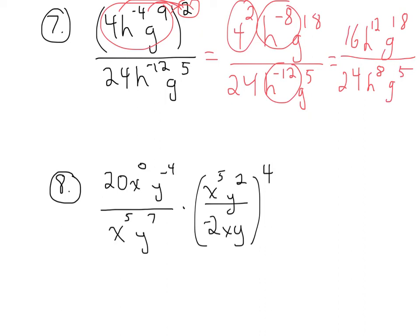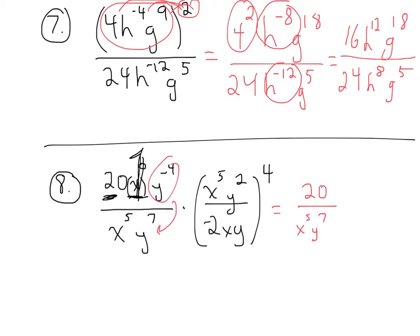All right, last but not least, let's take a look at number 8. In this one, first I notice only x here is raised to the 0 power. There's no parentheses around the 20, so this x to the 0 is going to become a big 1. So we have a 20 times 1 there. And we may want to rewrite that first fraction as 20 over x to the 5th, y to the 7th. And then I'm going to move this y to the negative 4th to the denominator and make it y to the positive 4th.